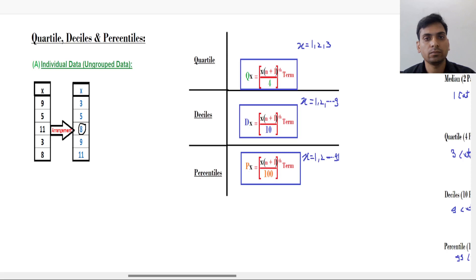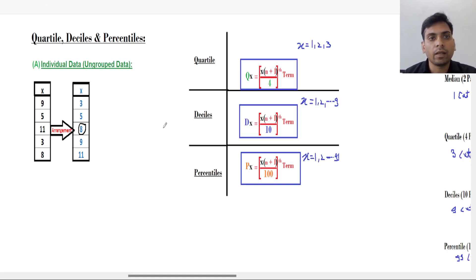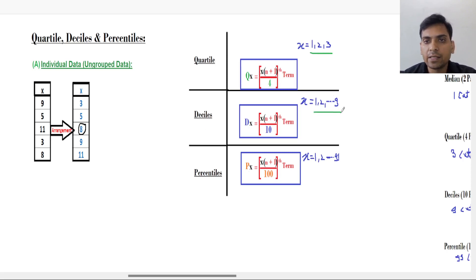Hello everyone. In the last lecture I explained the concept of median, quartile, decile, and percentile on the basis of median — especially quartile, decile, and percentile. Now we will see numerical problems for quartile, decile, and percentile for individual type of data in this lecture. We have this individual type of data and these formulae for quartile, decile, and percentile. There are only 3 quartiles, 9 deciles, and 99 percentiles.